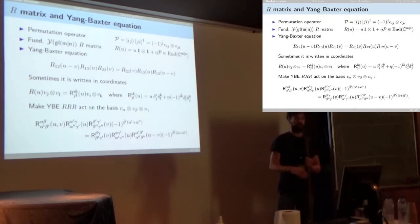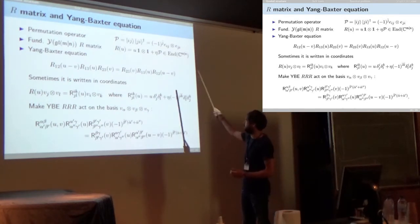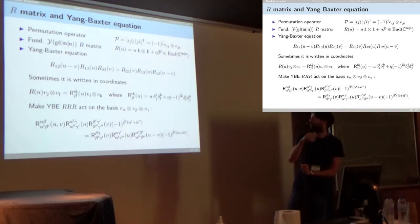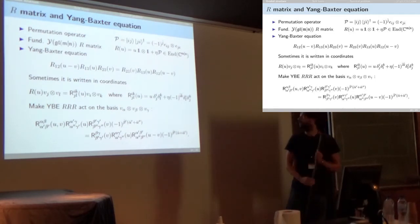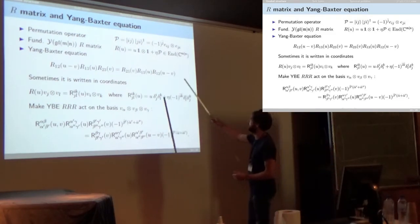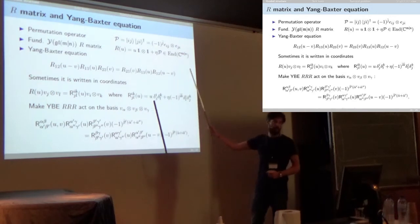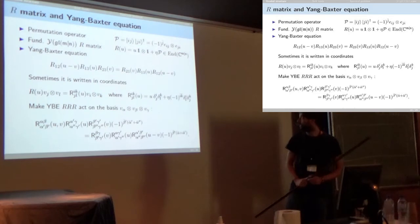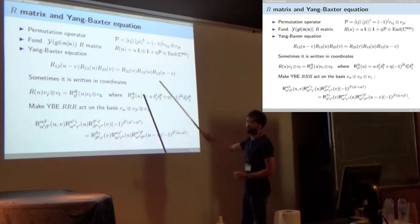To construct the R-matrix, we need the graded permutation operator. Taking the standard generators of the algebra, the fundamental R-matrix is essentially the same expression as in the non-graded case, but with the graded permutation operator. The Yang-Baxter equation writes in exactly the same way, though sometimes you find it written with explicit sign factors, especially in older Soviet papers. In practice, you act on the canonical basis with the R-matrix expressed as matrices rather than operators, and signs appear because you must switch vectors to place them in front of the right parameters in the tensor product.